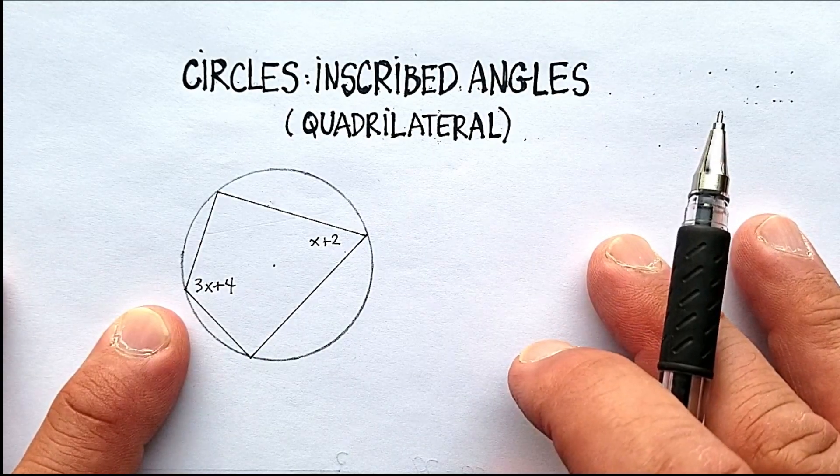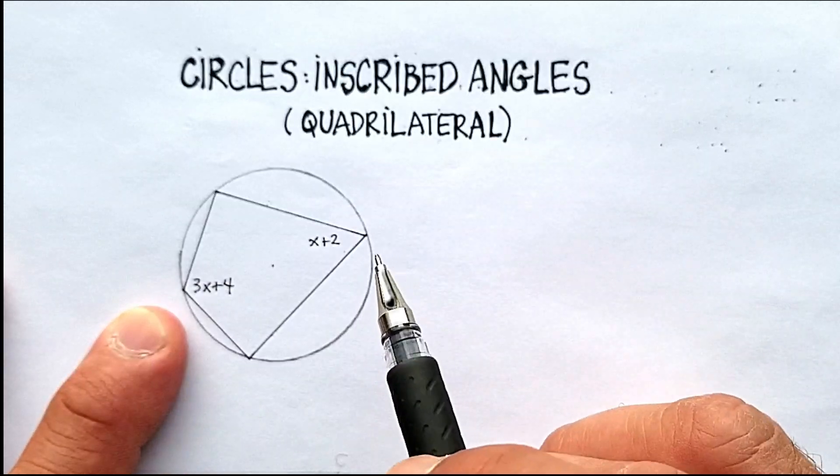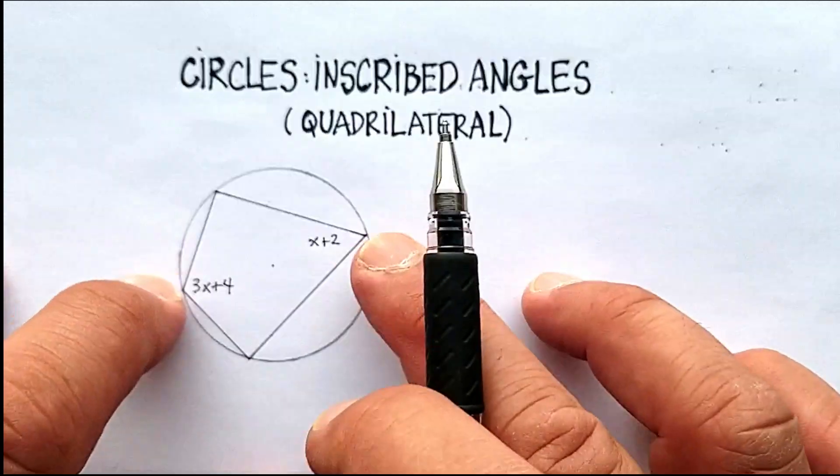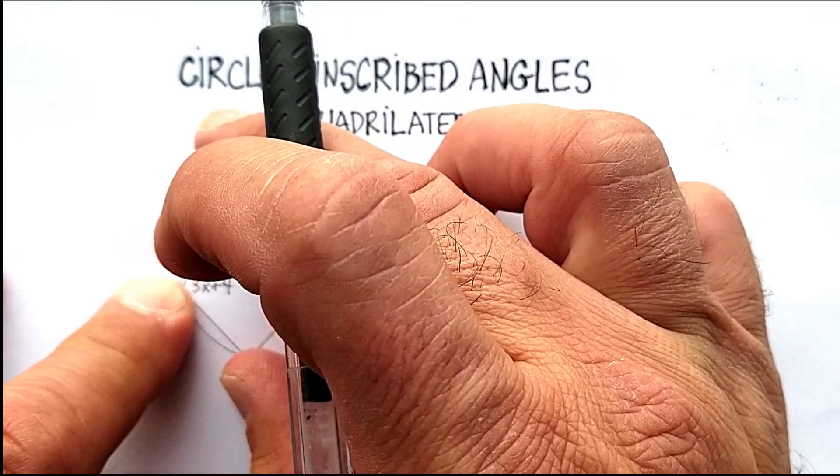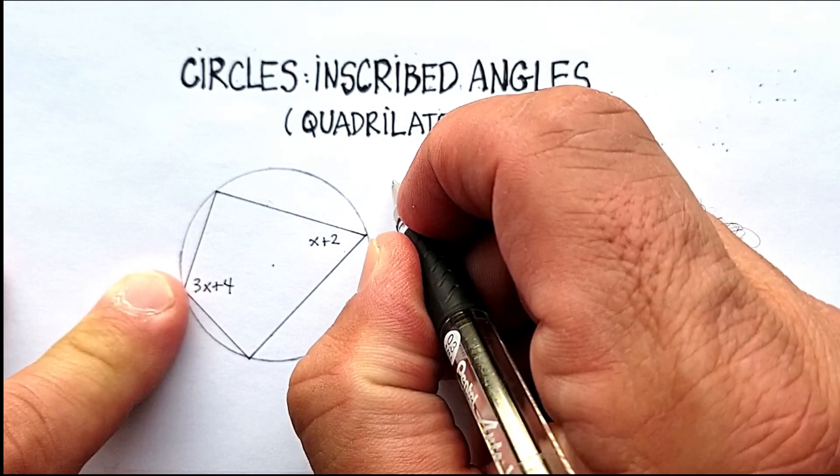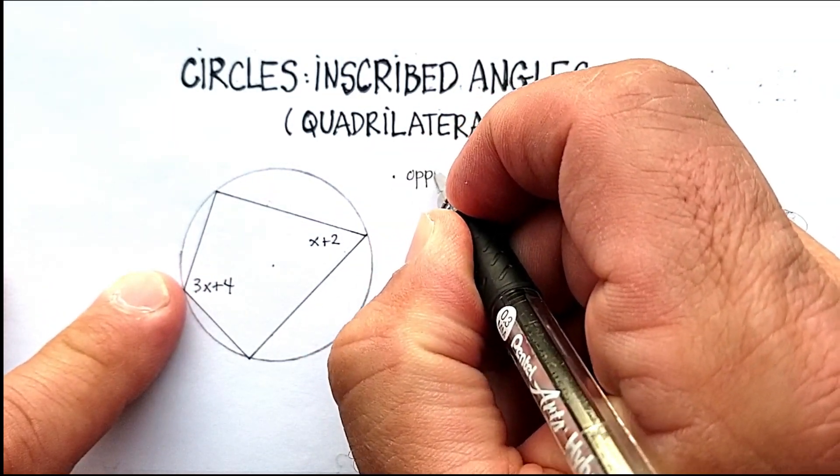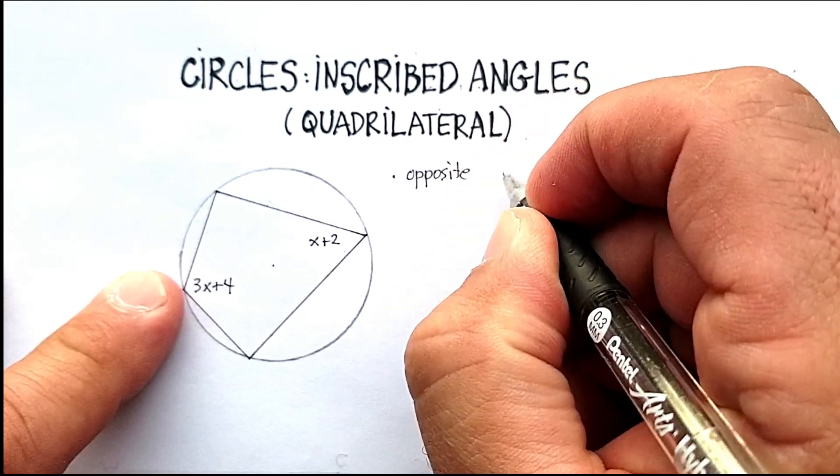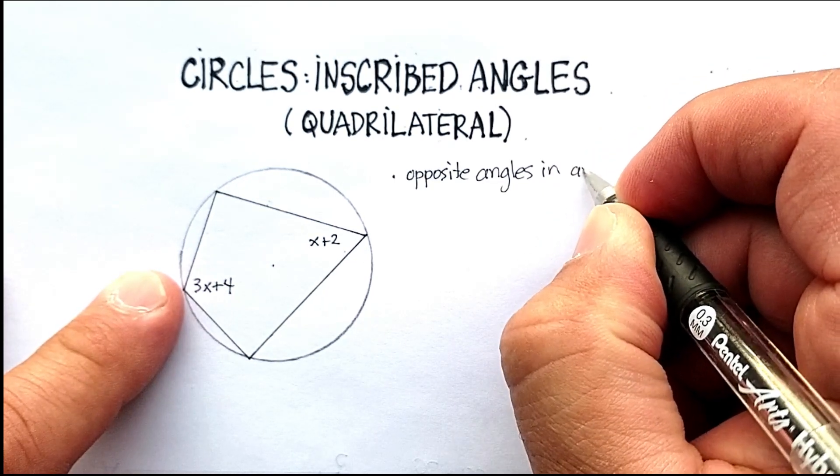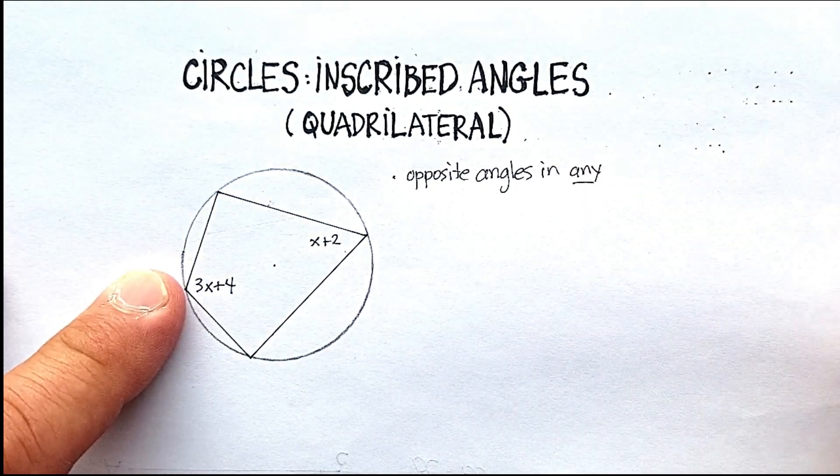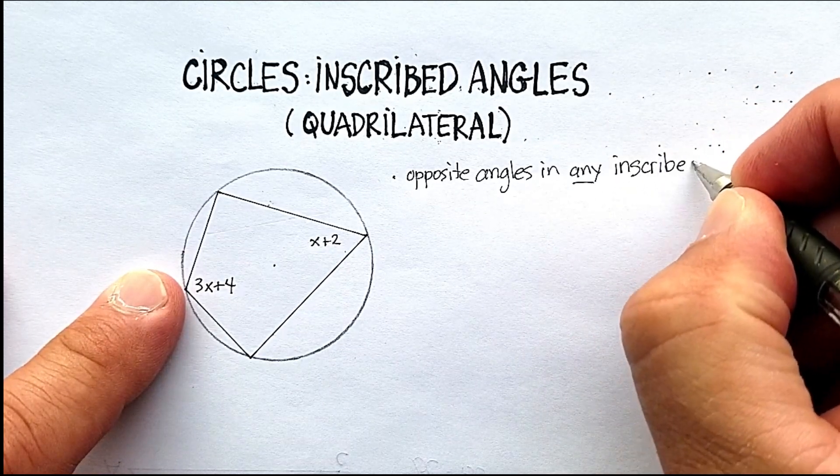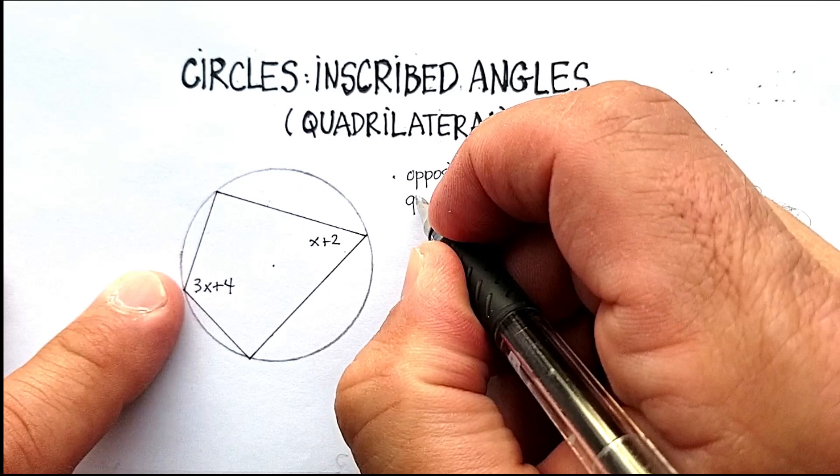And the property that I wanted to discuss is that the opposite angles in any inscribed quadrilateral are supplementary.